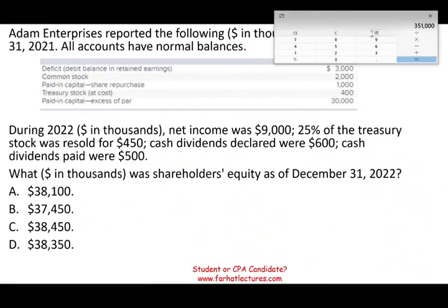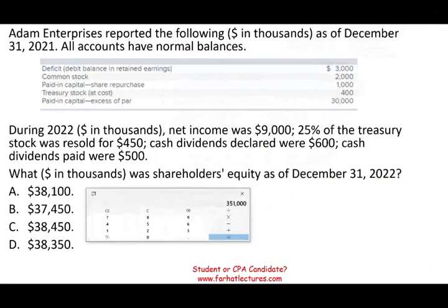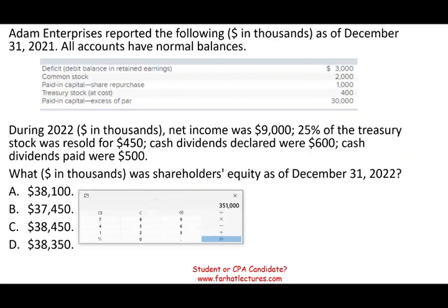Let's take a look at the next question. Adam Enterprise reported the following as of December 31st, with all accounts at normal balances: a deficit in retained earnings, common stock of $2,000, paid-in capital from share repurchase of $1,000 — which relates to treasury stock — treasury stock as a contra equity account, and APIC of $30,000. During 2022, net income was $9,000.